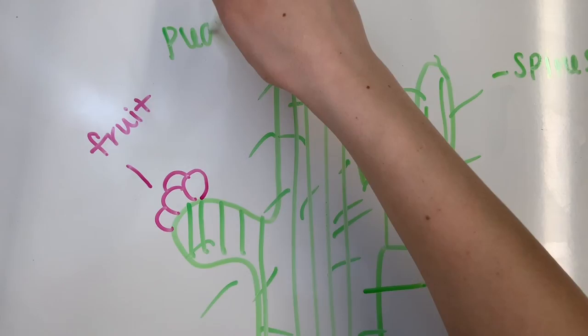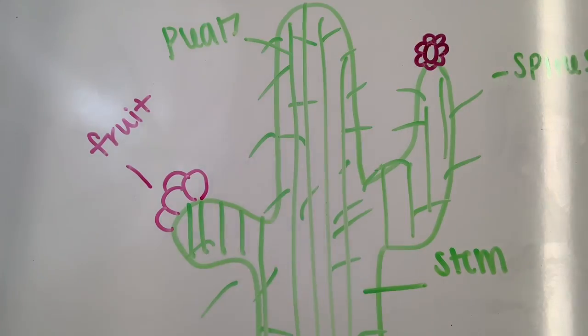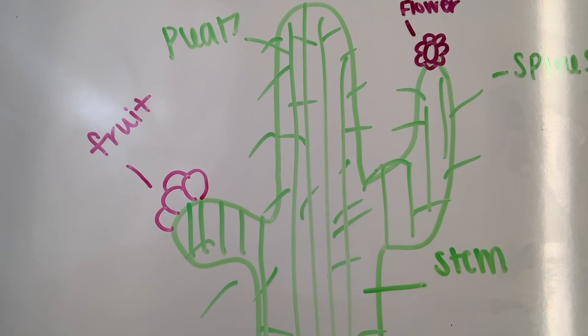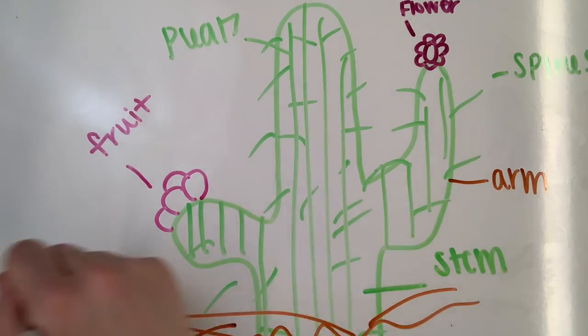The pleats of a cactus help it swell and take more water in. They can also shrink while the water is being used. The flowers are used to attract insects, birds, and bats. Pollen is produced in them, allowing a chance to reproduce. The arm of a cactus stores water, produces food, and lets flowers grow on them.